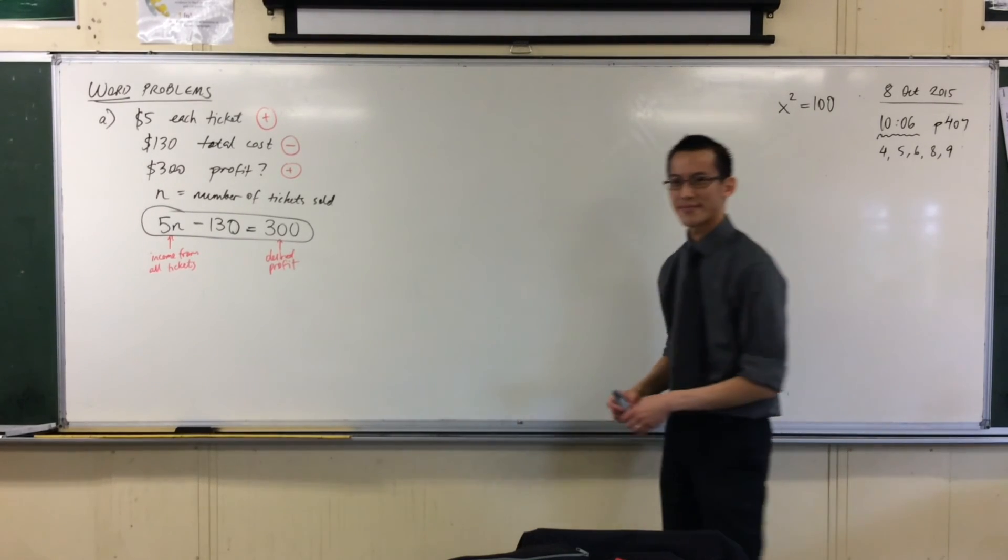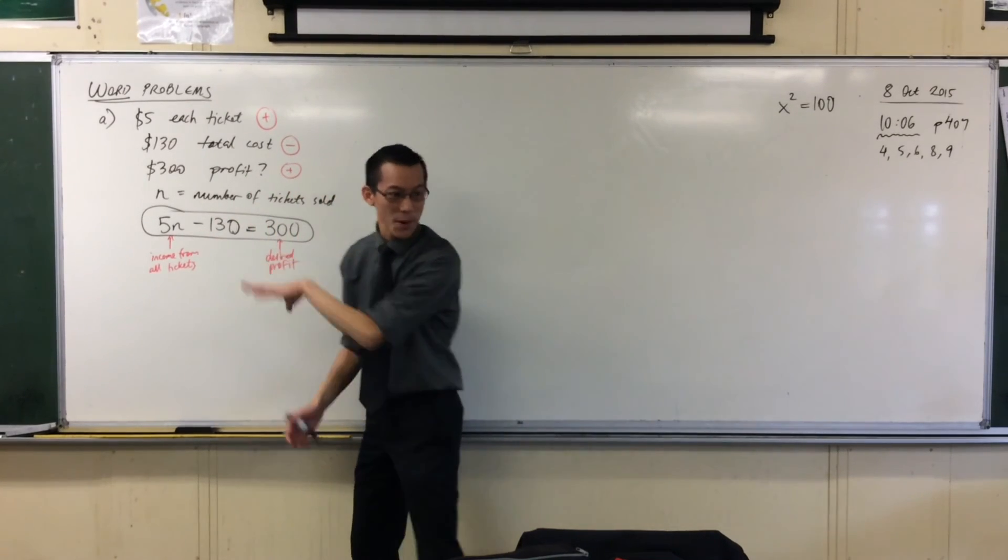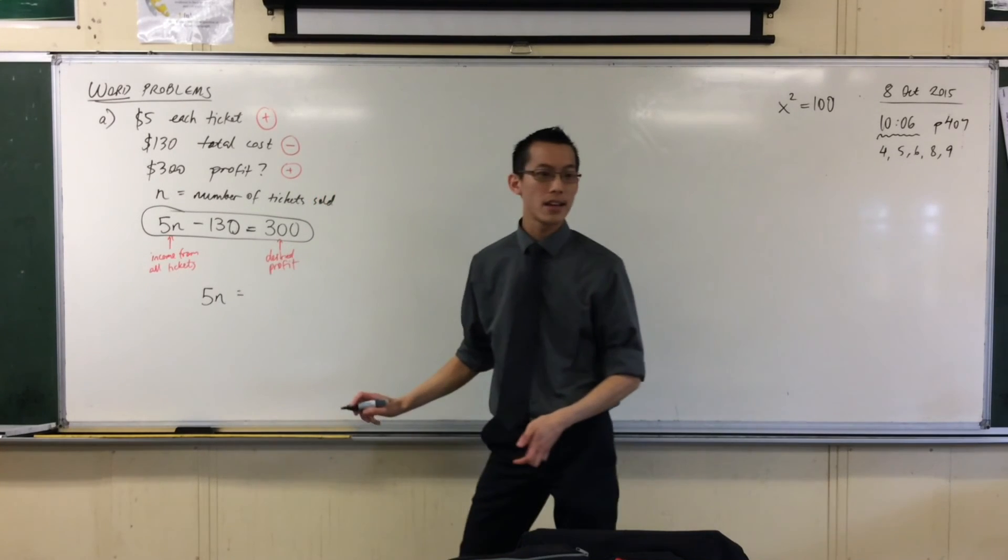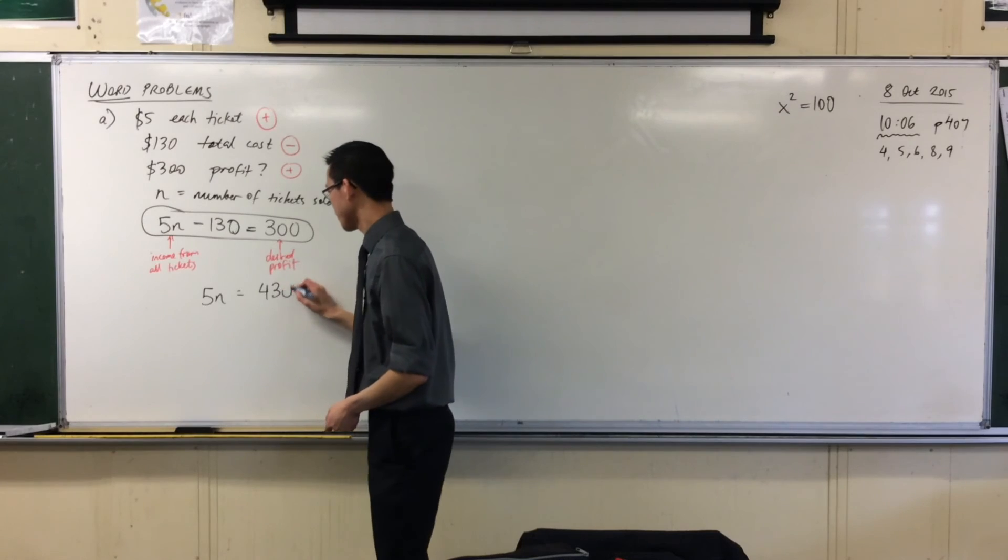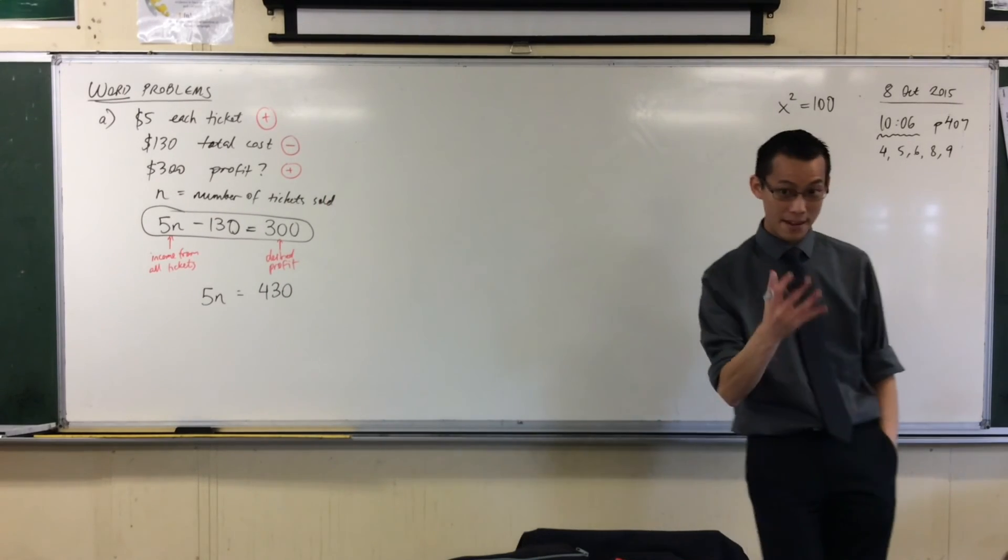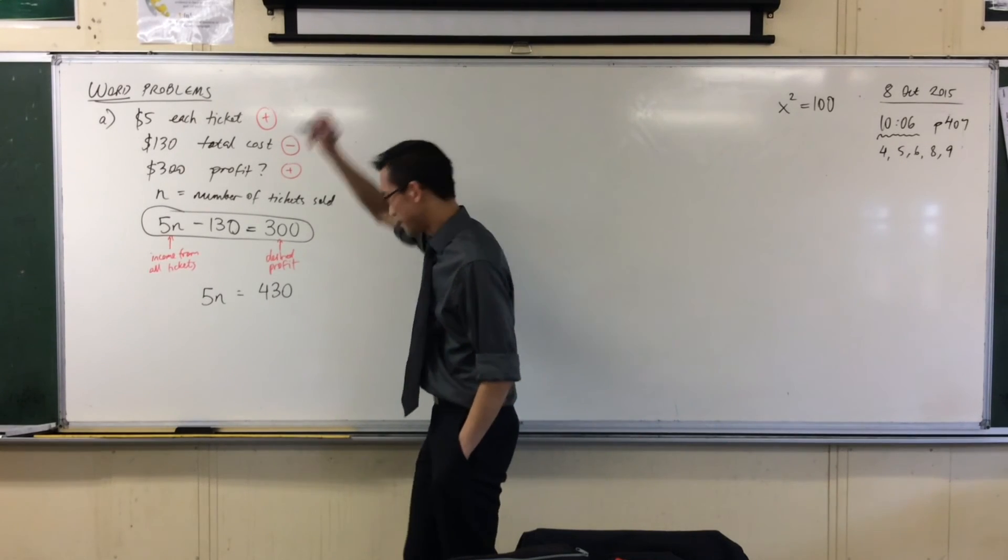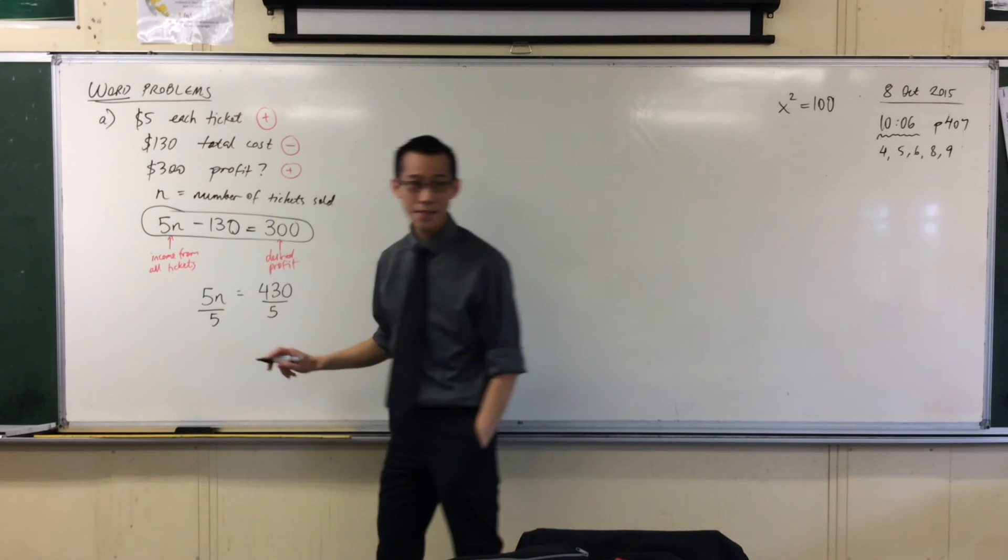What should I do? Yeah, plus $130. I want to get this $130 out of the way. I'll add it to both sides. That leaves me with 5N on that side and on the right hand side, $430. Very good. I only need to do one more thing to get N by itself. You need to divide by 5. So I'm going to divide by 5.